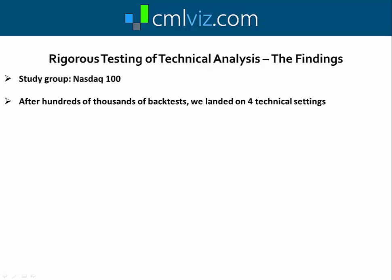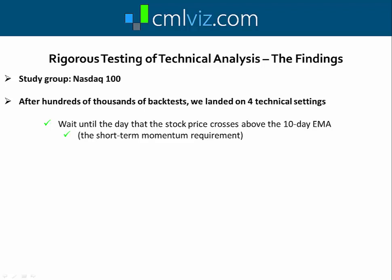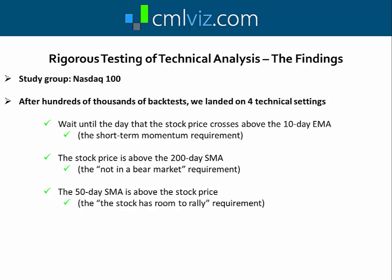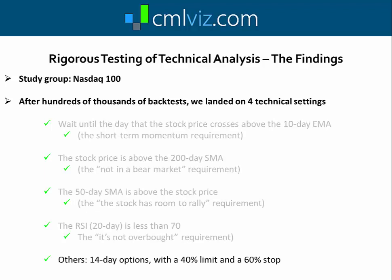After hundreds of thousands of back tests we landed on four technical settings. First, we wait until the day that the stock price crosses above the 10-day moving average — we call this the short-term momentum requirement. Second, the stock price is above the 200-day simple moving average — the 'we're not in a bear market' requirement. Third, we want the 50-day simple moving average to be above the stock price, meaning the stock has room to rally. And finally, the RSI is less than 70 — the 'it's not overbought' requirement. Simply stated: short-term momentum, not in a bear market, room to rise, and not overbought.